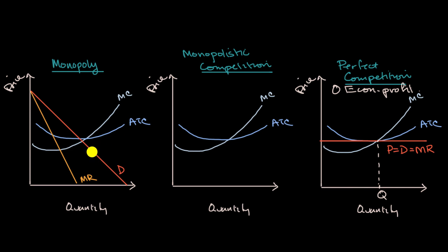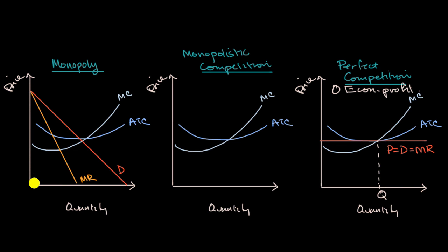A monopoly is the opposite extreme. They are the only player in the market with insurmountable barriers to entry. Their demand curve is essentially the market demand curve because they're the only product there — at high prices, you have low quantity demanded, and at low prices, you have high quantity demanded. In many situations, a monopoly firm cannot do price discrimination; it has to charge the same price to every consumer.